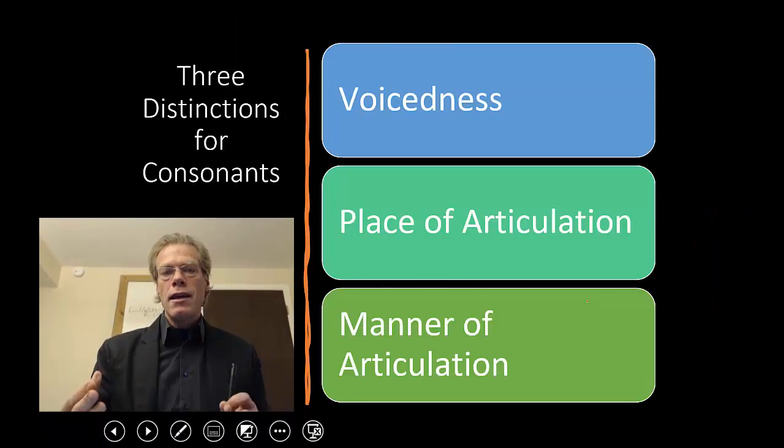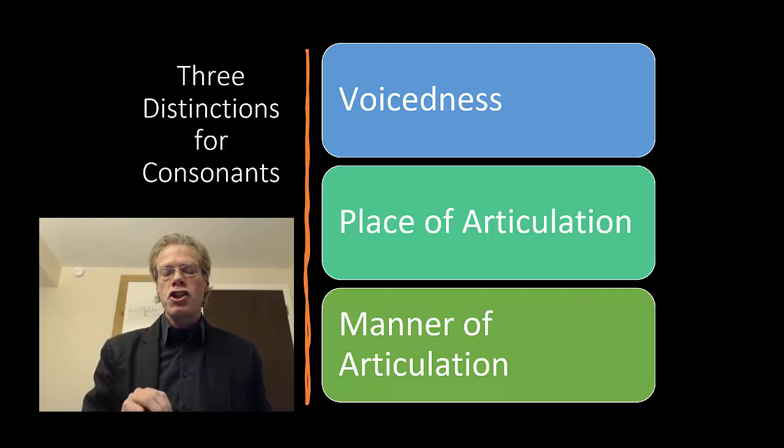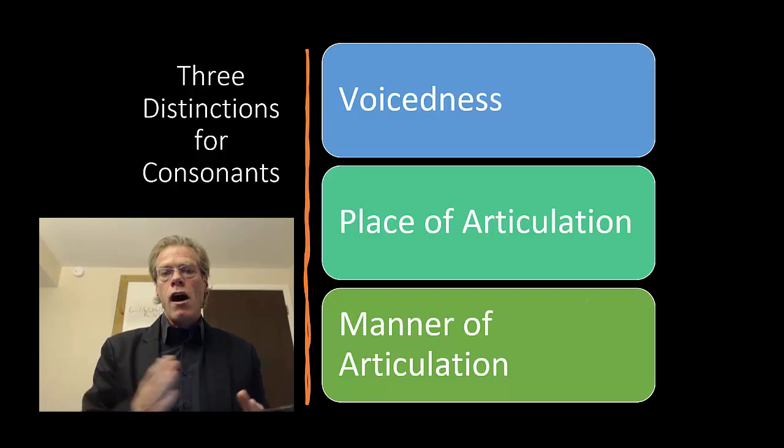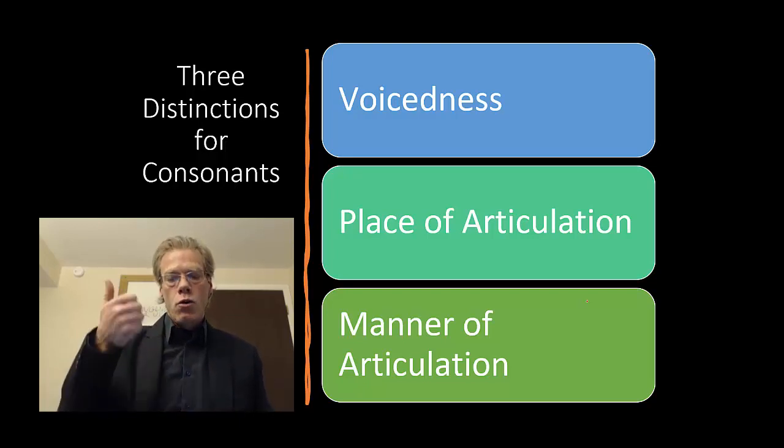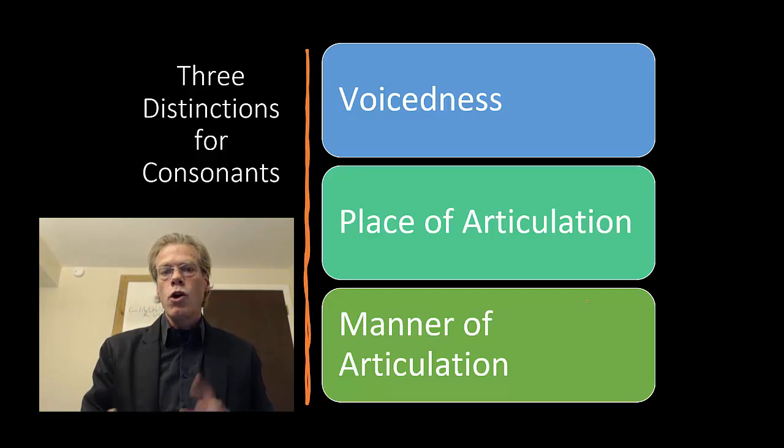English consonants. In the International Phonetic Alphabet, we're going to use these three distinctions in order to define our different consonants. So we've got the distinction of voicedness, the distinction of place of articulation, and the distinction of manner of articulation. And we'll go through each one in turn.